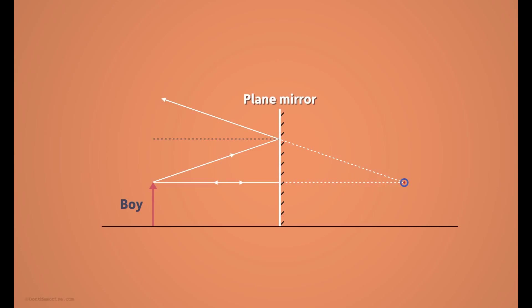And to us, this is where the top of the image appears to be. When we look at this point, it appears to us that all the light rays are diverging from this point. But in reality, there are no light rays behind the mirror.